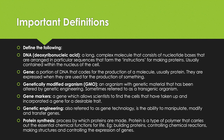Genetic engineering, also referred to as gene technology, is the ability to manipulate, modify, and transfer genes. Protein synthesis is the process by which proteins are made. Protein is a type of polymer that carries out the essential chemical functions for life — for example, building proteins, controlling chemical reactions, making structures, and controlling the expression of genes. Essentially, if you can manipulate an organism to produce a certain type of protein, that protein will tell that organism to do something, and we can start to manipulate organisms to do what we want them to do.